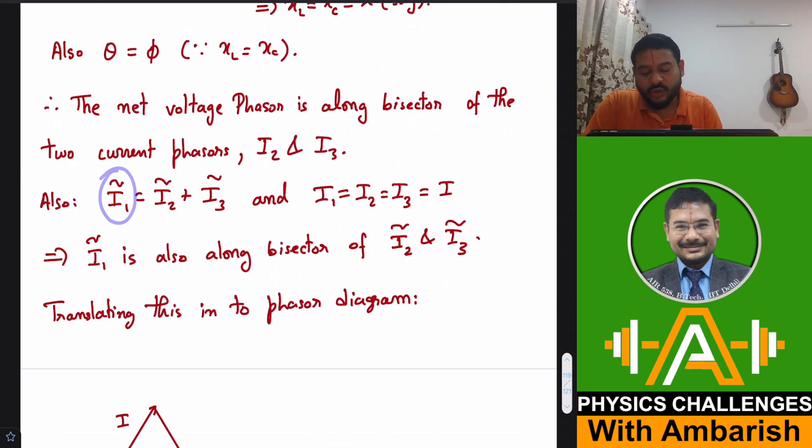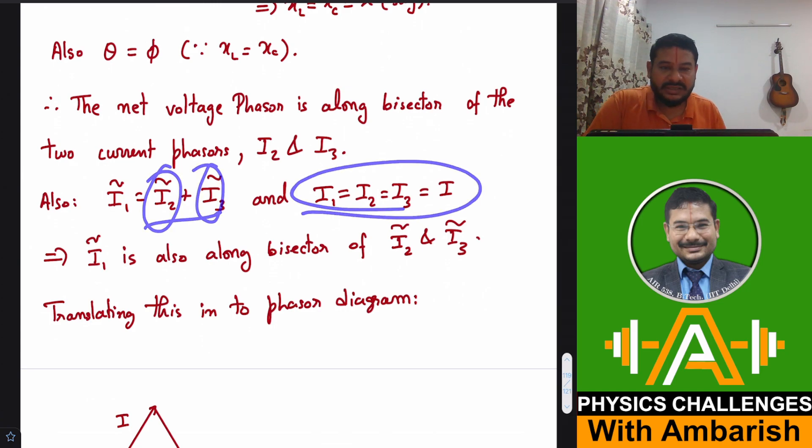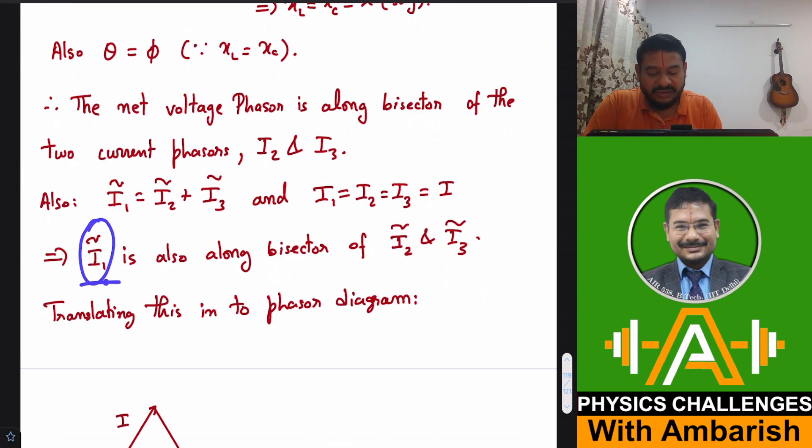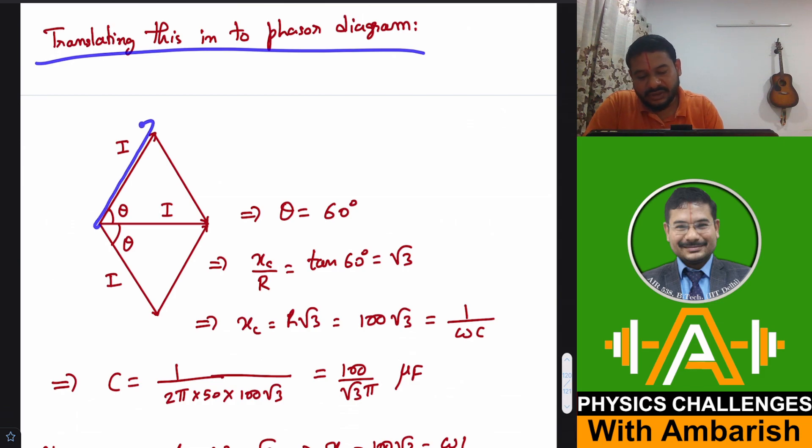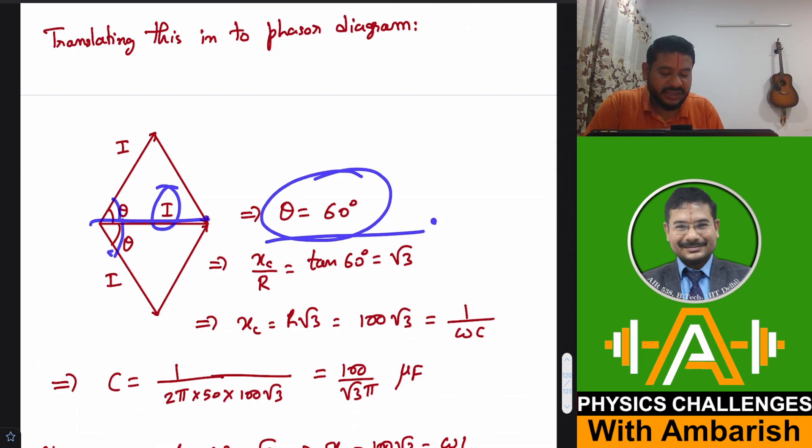Also the total current from the generator is the phasor sum of I2 and I3 and magnitude wise all these three currents are equal. Therefore, I can say that the generator current I1 is also along the bisector of I2 and I3. Why? Because when you have equal vectors, the resultant is always along the bisector if the magnitude of two vectors is equal. So translating this into phasor diagram. So this is your let's say capacitor current. This is your inductor current, inductor branch current and both these angles are shown by theta because we have shown that they are equal. And this is the resultant current, which is also I. And so I can see that I cos theta plus I cos theta is equal to I that gives you theta is equal to 60 degrees.